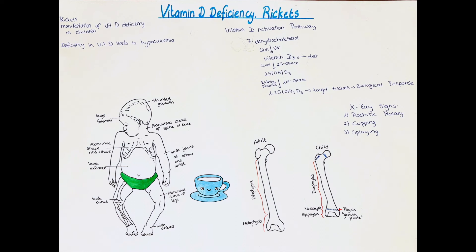Now let's talk about how rickets is diagnosed. If we suspect a pediatric patient to have rickets it would be good to order laboratory tests to check blood calcium levels as well as vitamin D levels. In rickets patients these tend to be lowered, and because of this the body compensates by producing more parathyroid hormone, so PTH may be elevated. We should also order X-ray imaging to check for the integrity of the bones and look for signs such as metaphyseal cupping, splaying, or expansion of the anterior ribs.